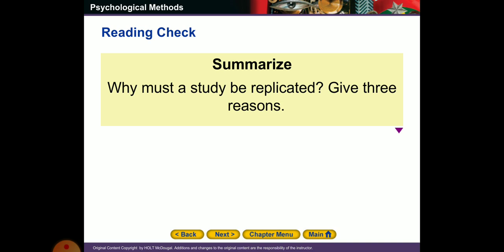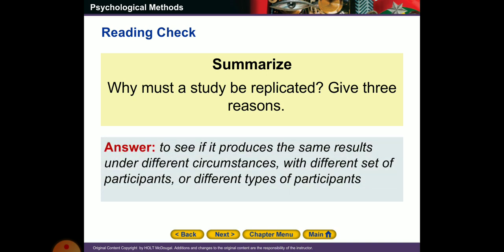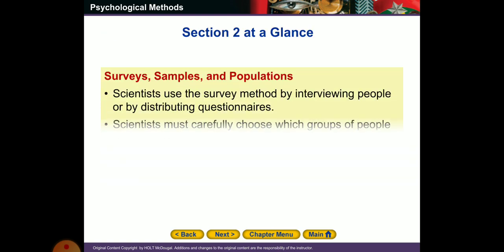So, we have to summarize what we took. Why must the study be replicated? Give three reasons. This is very important. It can come in the exam to see if it produces the same results under different circumstances, with different set of participants, or different types of participants.